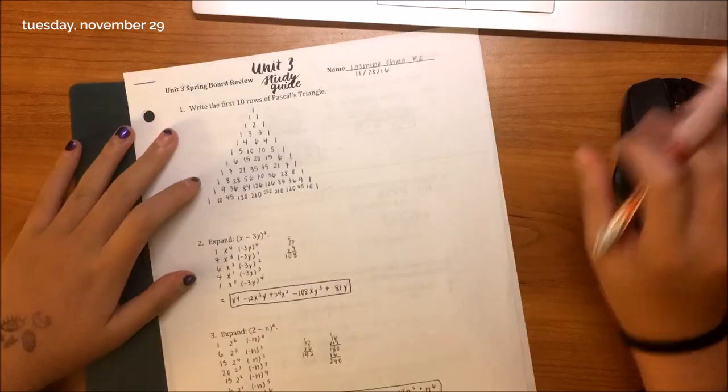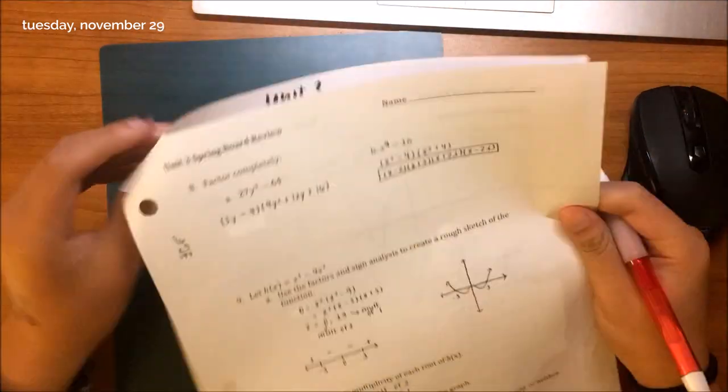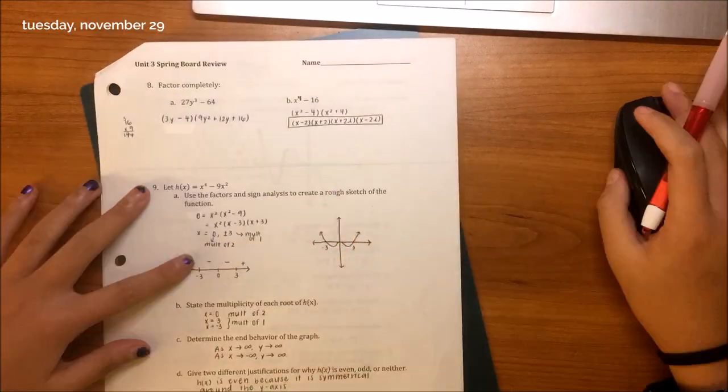Now I'm checking the answers for my Unit 3 study guide for math. I'm using a red Uniball Signo 207 pen.